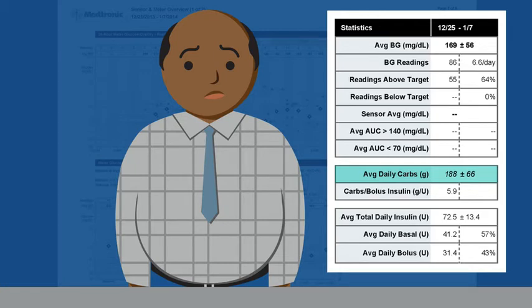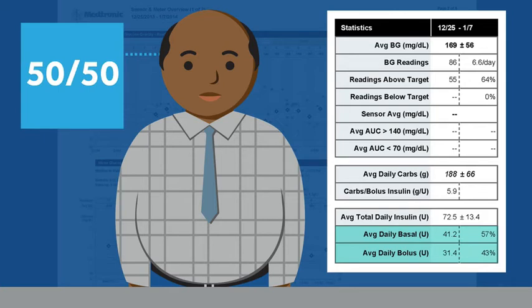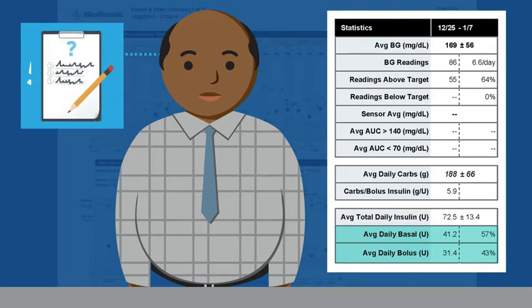Below the carbs, he sees the averages for daily basal and daily bolus. He remembers from his pump training that his basal and bolus should be about split 50-50. He sees that it isn't quite there, so he notes that as well.